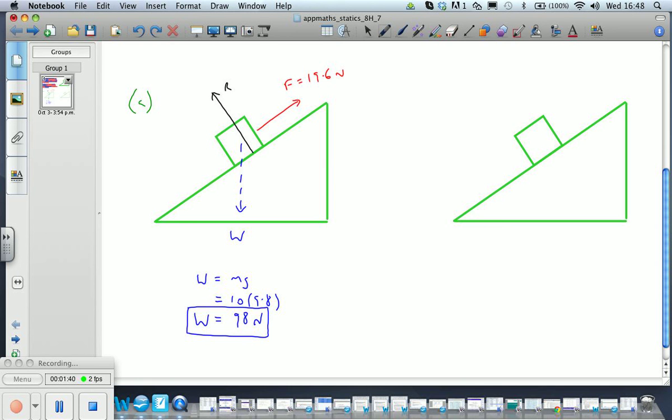And we have friction acting. Now in this case, the friction is acting up the way because it prevents the block from moving down the way. So there's our friction μR, there's our contact force R, and our weight.